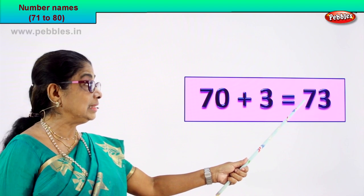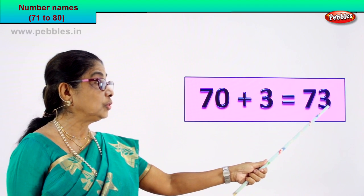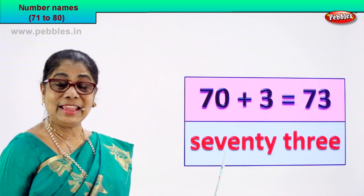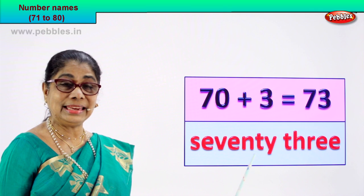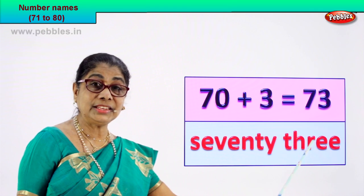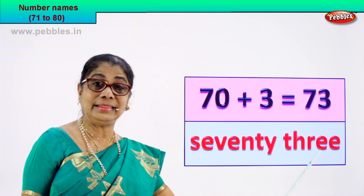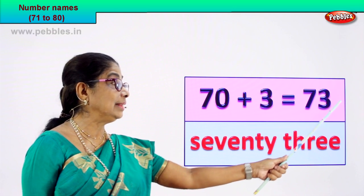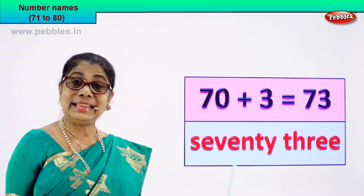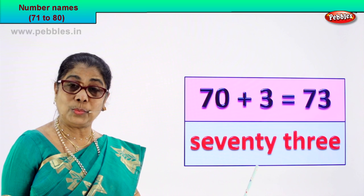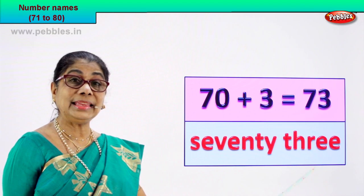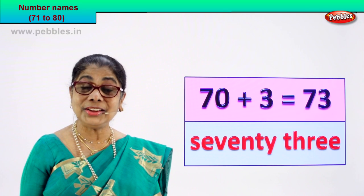How do you spell 70? How do you spell 3? Come on, let's do it. s-e-v-e-n-t-y — 70, then t-h-r-e-e. The numeral 73 — we write its name as seventy-three: s-e-v-e-n-t-y, t-h-r-e-e. Good.